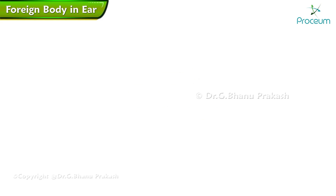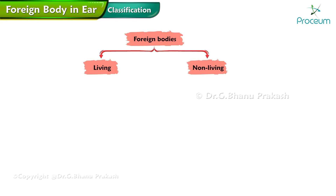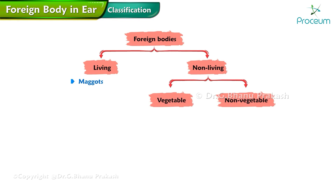Foreign body in the ear — classification. Foreign bodies are classified into living and non-living. Living foreign bodies include maggots. Non-living foreign bodies are vegetable and non-vegetable. Vegetables include seeds and wood. Non-vegetable foreign bodies include beads, plastic, metal, and paper.